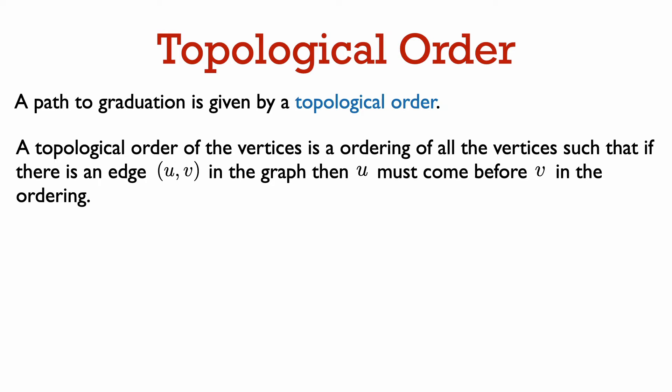so that for every edge from U to V in the graph, the number labeling U is smaller than the number labeling V. So for every directed edge from U to V in the graph, the number labeling U should be smaller than the number labeling V.